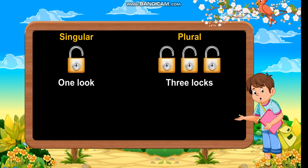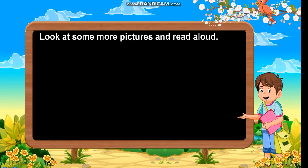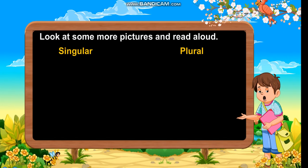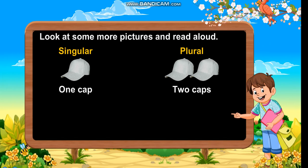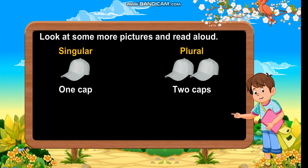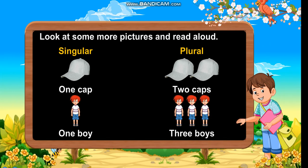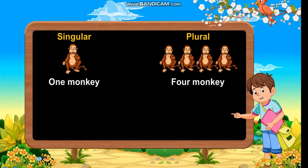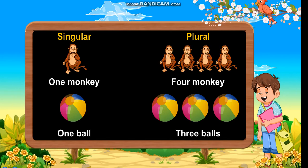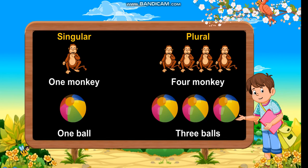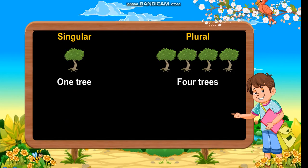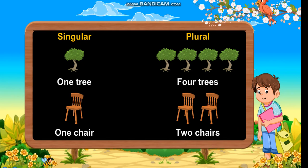Look at some more pictures and read aloud. Singular — Plural. One cap, two caps. One boy, three boys. One monkey, four monkeys. One ball, three balls. One tree, four trees. One chair, two chairs.